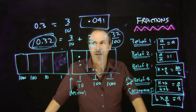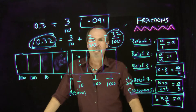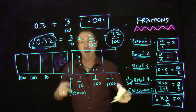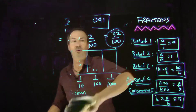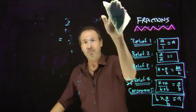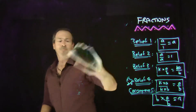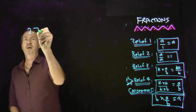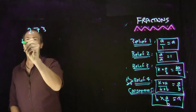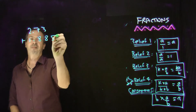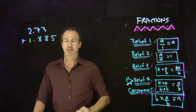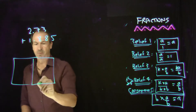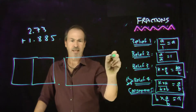Now in this whirlwind introduction to decimals, let me start doing some arithmetic with decimals to see how my brain thinks about them in this fraction story. Let's do something like 2.73 plus 1.885. In my brain, this is really a decimal machine — I've got all these place-value boxes: ones, tens, hundreds, tenths, hundredths, thousandths, and so on.